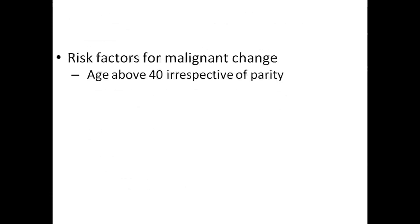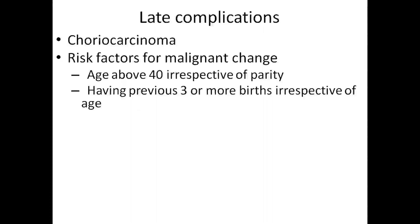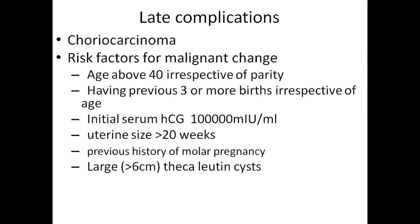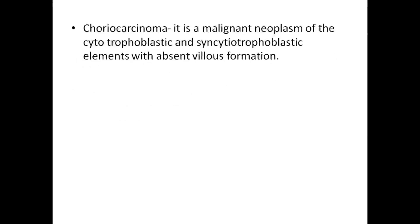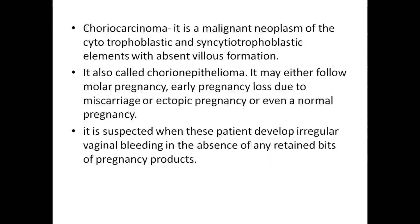Late complications: the risk factors for malignant change include age above 40 irrespective of parity, having three or more previous births irrespective of age, initial serum HCG more than 1 lakh, uterine size more than 20 weeks, previous history of molar pregnancy, and large theca lutein cysts. Choriocarcinoma is a malignant neoplasm of the cytotrophoblast and syncytiotrophoblastic elements with absent villus formation, also called chorioepthelioma. It may follow molar pregnancy, early pregnancy loss due to miscarriage or ectopic pregnancy, or even a normal pregnancy. It is suspected when patients develop irregular vaginal bleeding in the absence of any retained products of pregnancy.